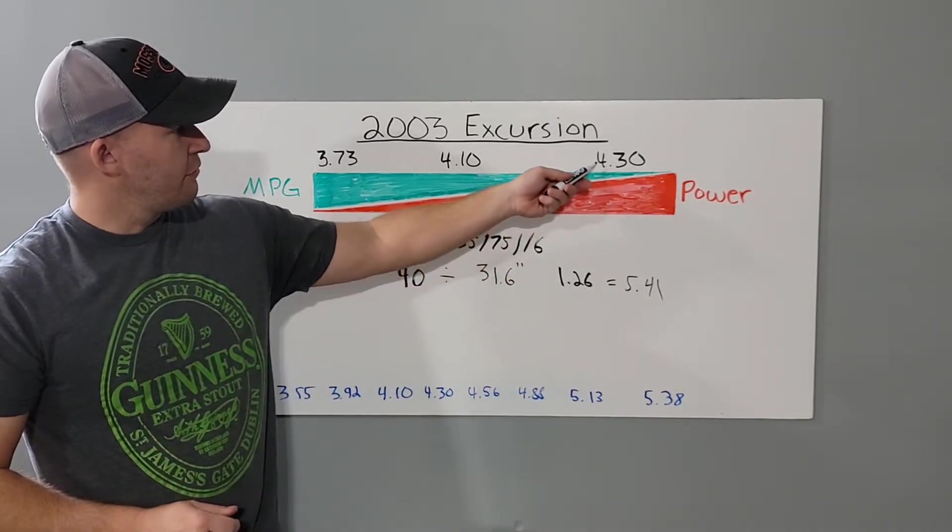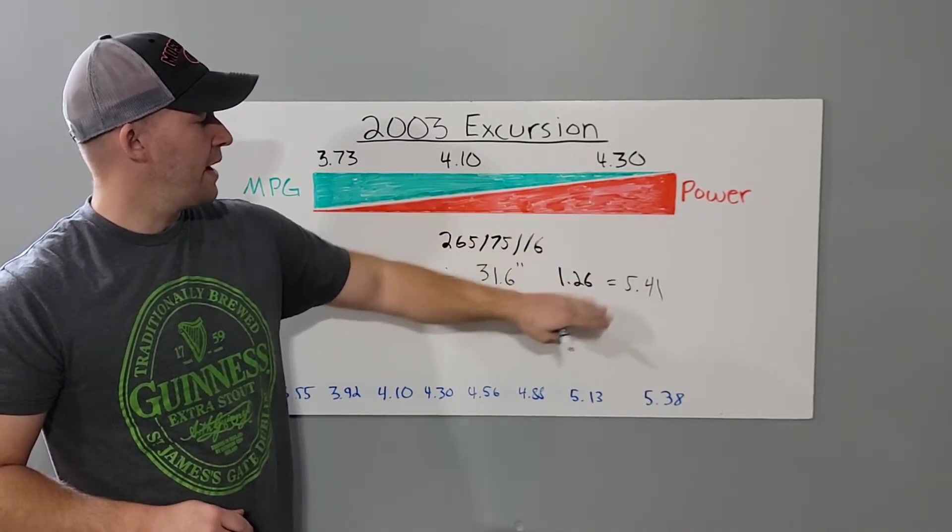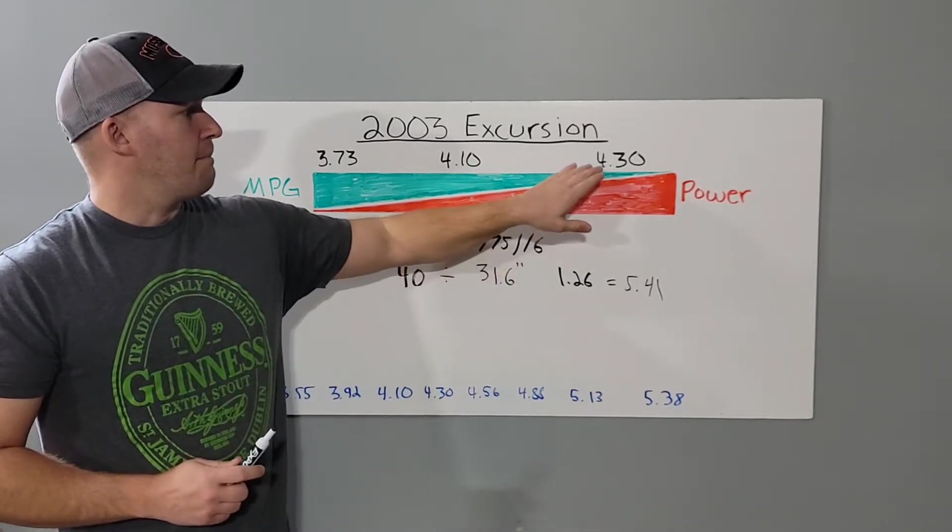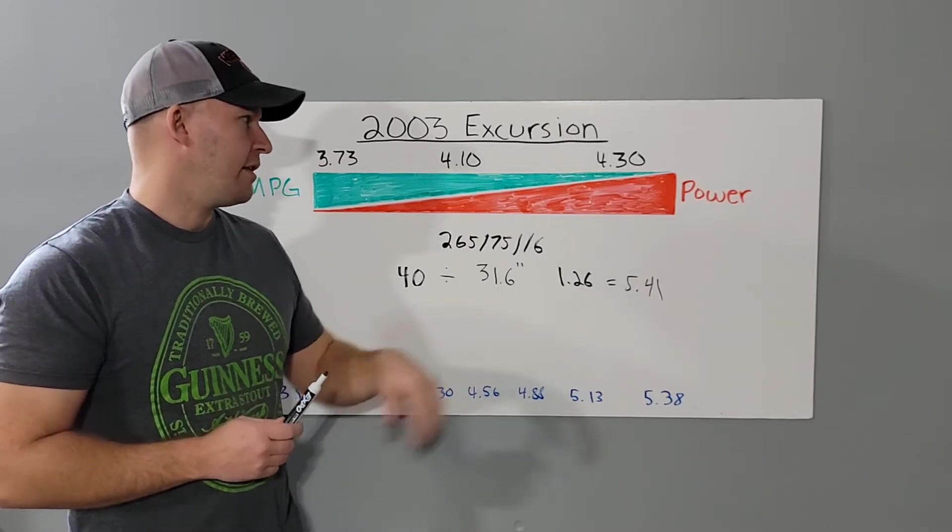It will be based off my 4.30 original. And as long as you keep with your original axle ratio, your speedometer will be correct as well. You won't have to worry about calibrating your speedometer. So, 4.30 times 1.26 is 5.41.